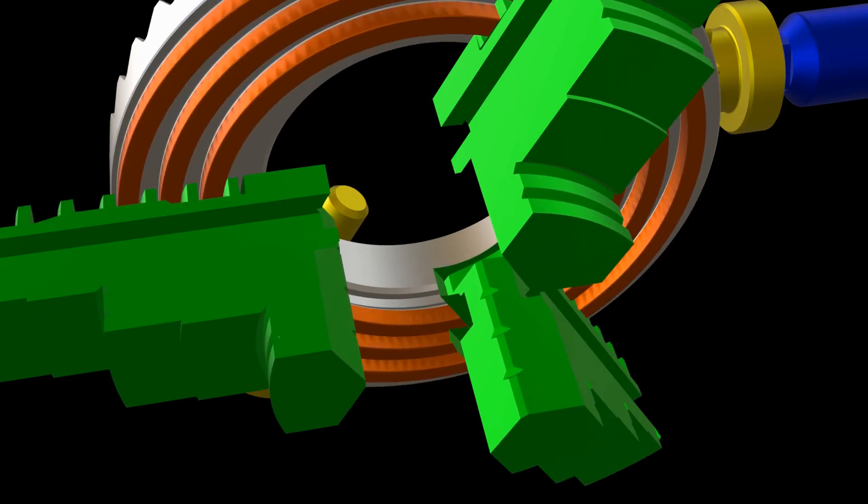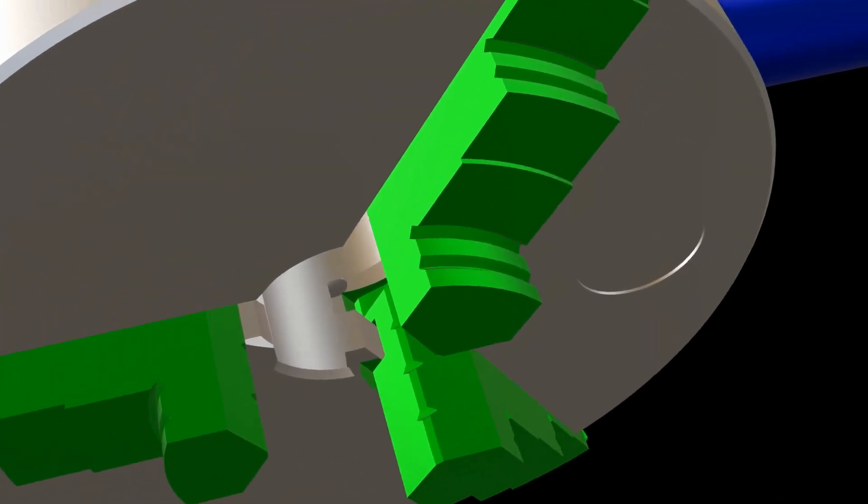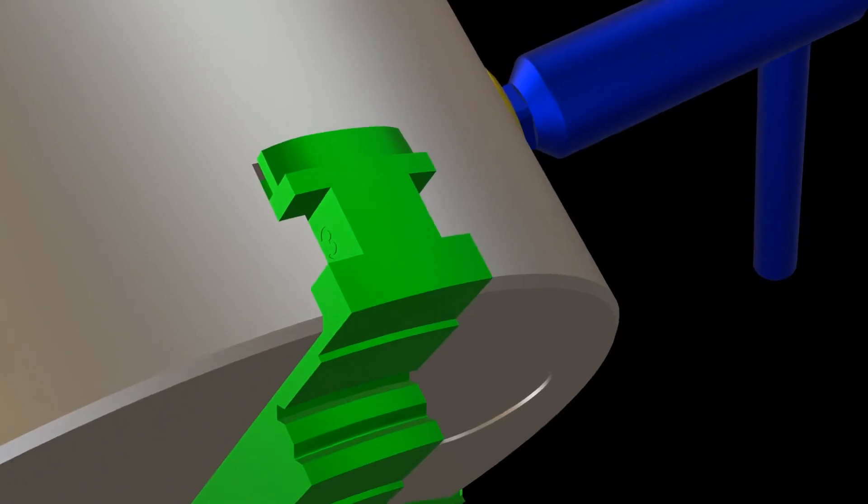If you look at the back face of each jaw, you can see what looks like a rack that meshes with the spiral of the ring gear. The rack is not allowed to rotate or move in any other direction by these guide surfaces, which are in contact with the casing of the chuck.